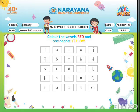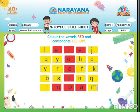See, on this page, Vowels and Consonants are given. Now children, what you have to do — you have to colour the Vowels red and Consonants yellow. Like this.